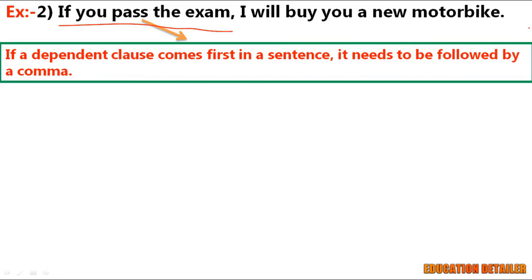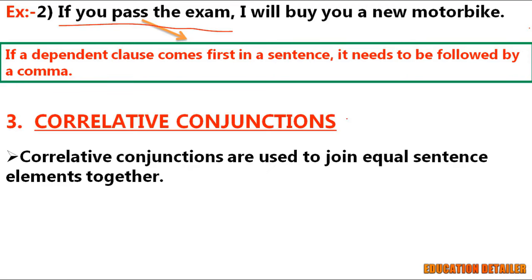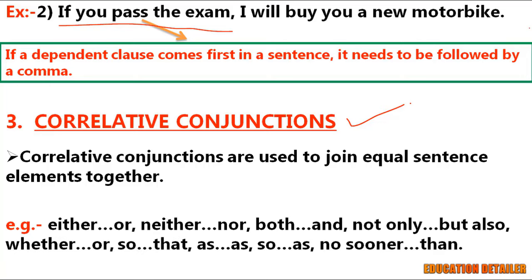Now, the third and last type: correlative conjunction. Correlative conjunctions are used to join equal sentence elements together. Remember, correlative conjunctions are always used in pairs, like: either...or, neither...nor, both...and, not only...but also, whether...or, so...that, as...as, so as, no sooner...than.